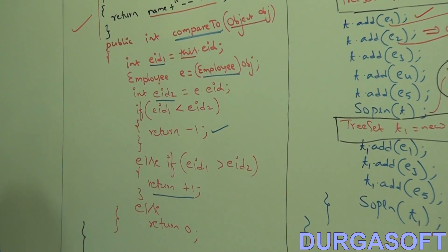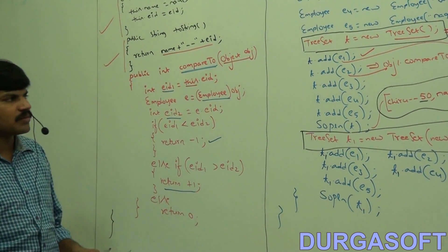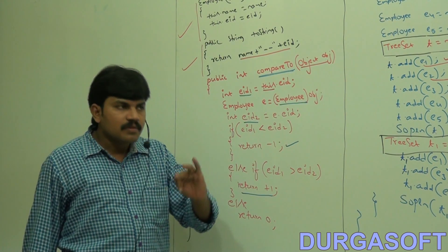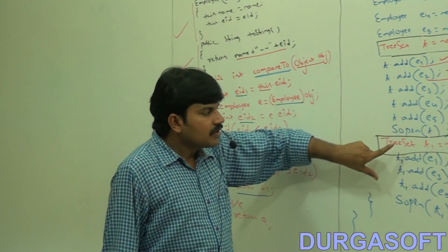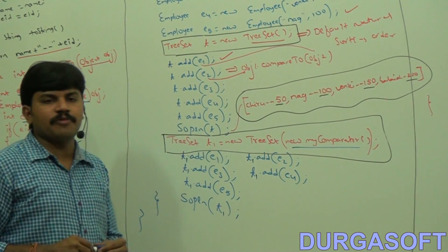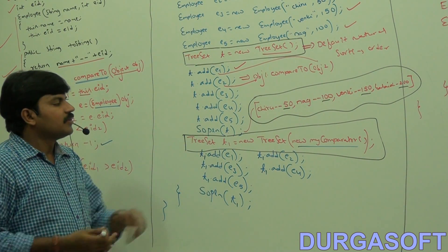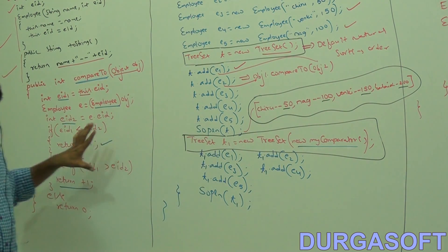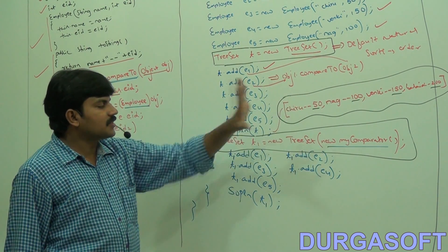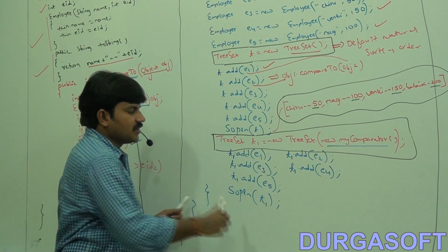Out of 100 people using the Employee class, 90% may be satisfied with this ID-based sorting. But a few may say: I don't want sorting based on employee ID, I want it based on name or salary. Then how can you define your own sorting? TreeSet T1 is equal to new TreeSet of new MyComparator.